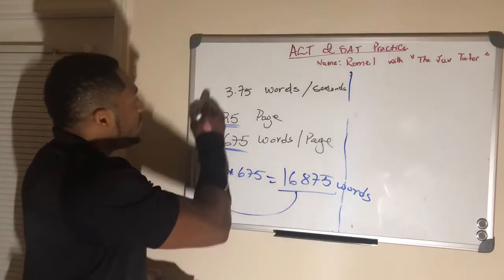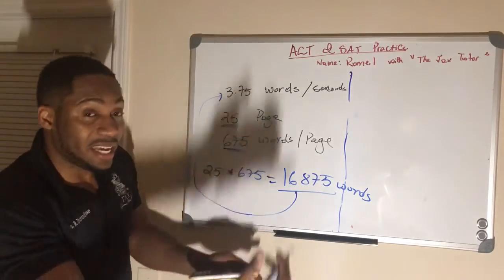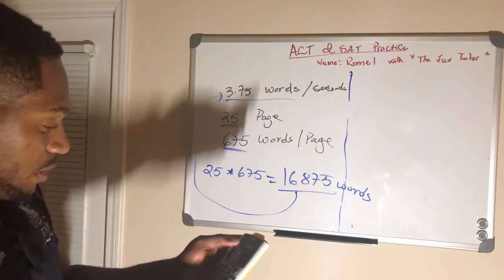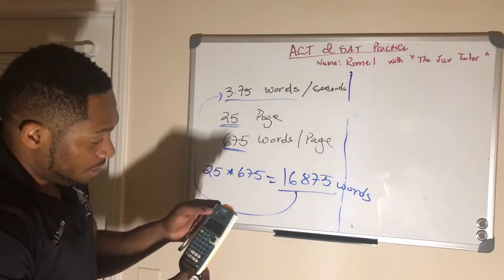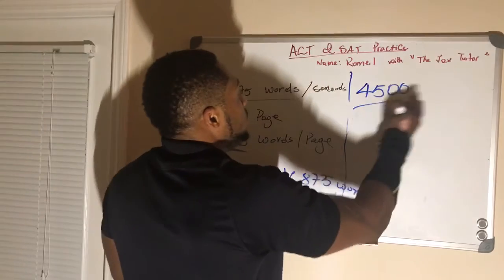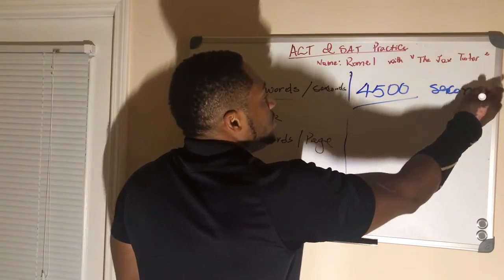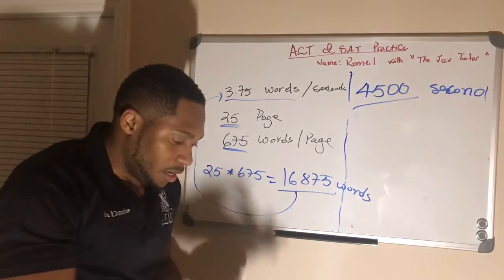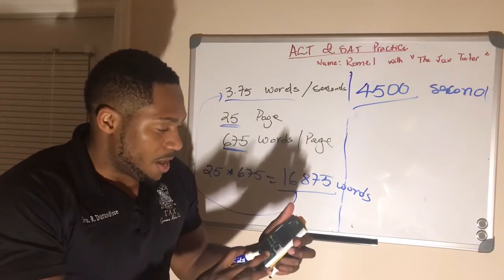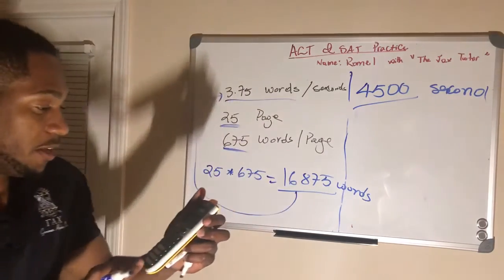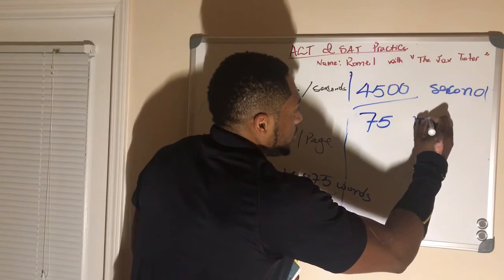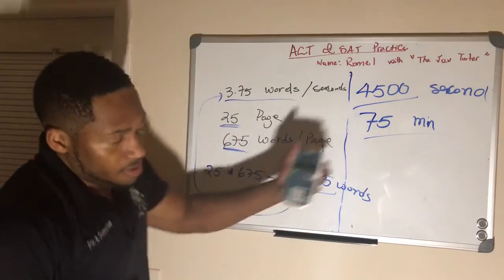How long does it take him? It's 16,875 divided by 3.75, because every second he types 3.75 words. So, if we want the time, we'll just divide by 3.75. What we have here is 4,500 seconds. But of course we can't really do much with that, so 4,500 seconds — we gotta convert it into hours and minutes. If we divide it by 60, that would give us how many minutes? 4,500 seconds is 75 minutes.